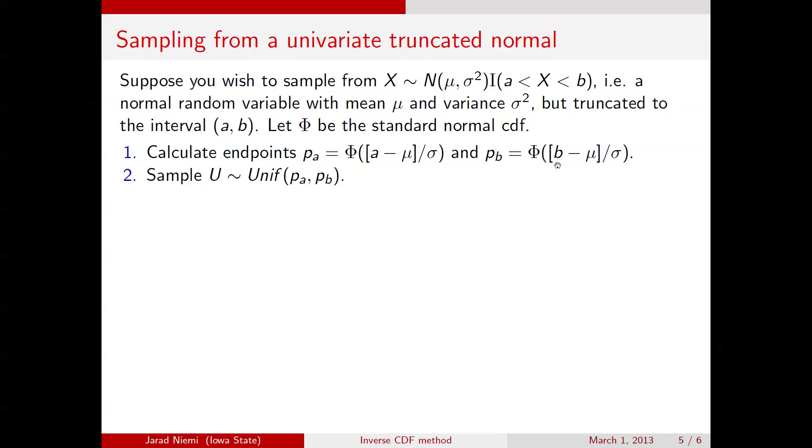And we sample then a uniform. Now in this case, we're not using what we talked about before with the uniform 0, 1, but we're adapting the method a little bit. Now sample between p_a and p_b. That is the sample between the quantiles of these two. And then we can calculate the inverse of the standard normal CDF of u, multiply by the standard deviation and add the mean.